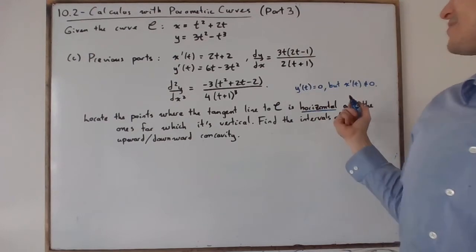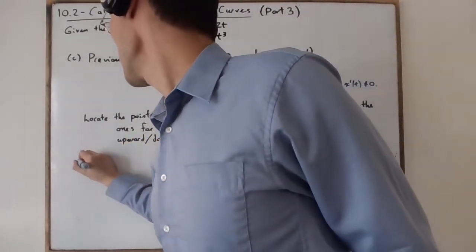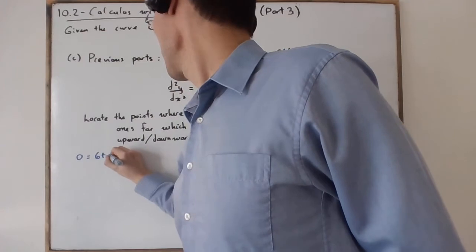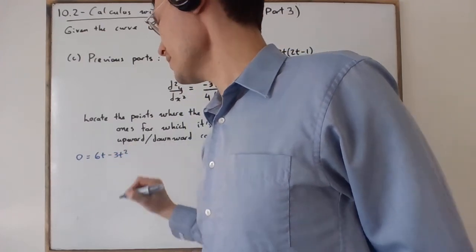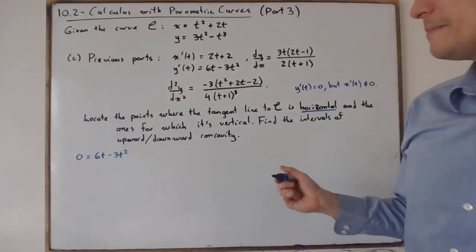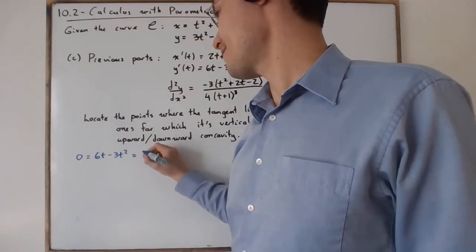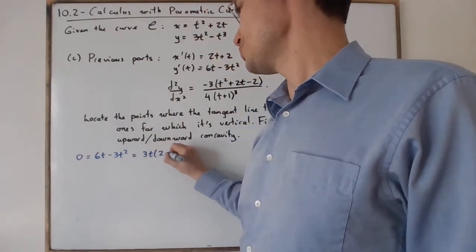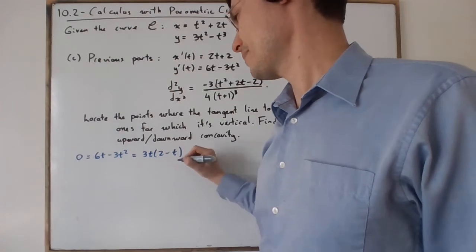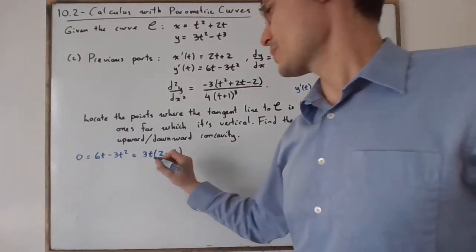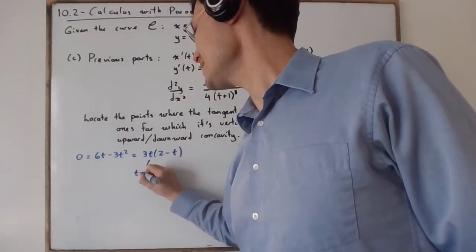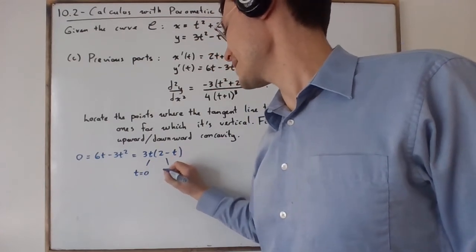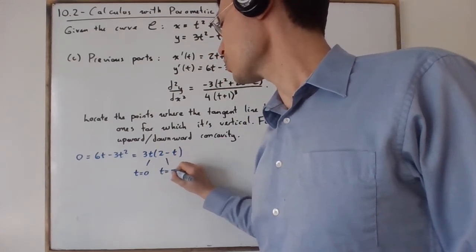You set y'(t) equal to 0. So 0 equals 6t minus 3t squared. You factor to get 3t times (2 minus t). This happens when t equals 0 and when t equals 2.